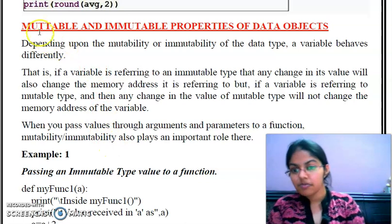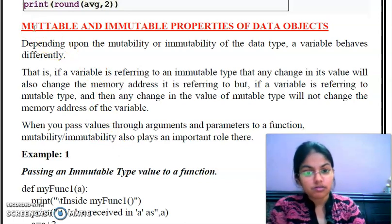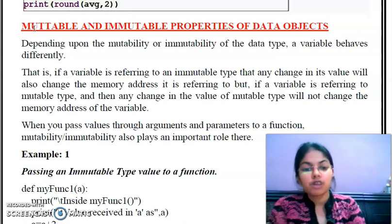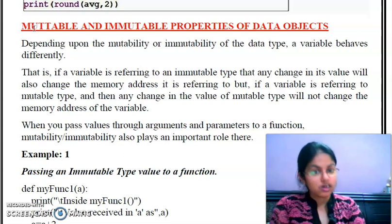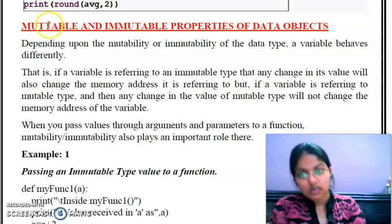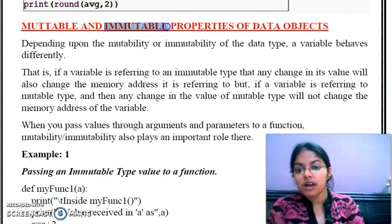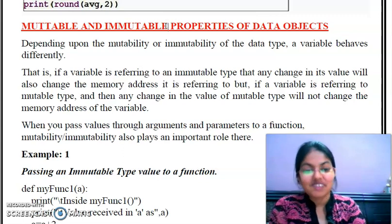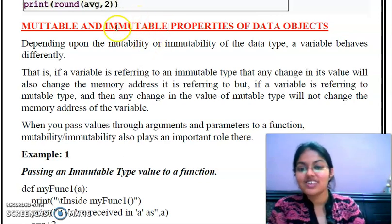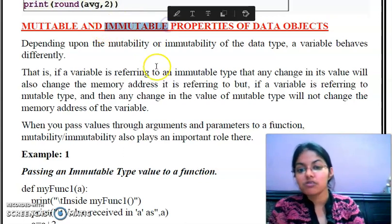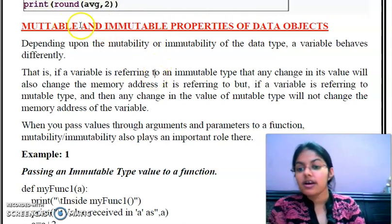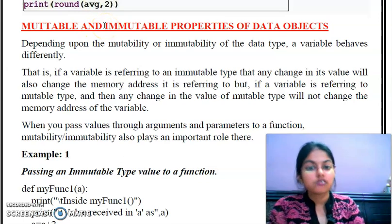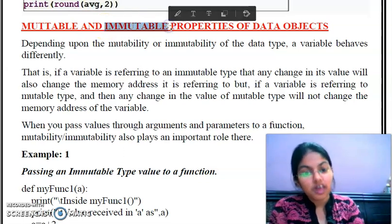Next is mutable and immutable properties of data and objects — again an important topic. Mutable means a value which can be changed, and immutable means a value which cannot be changed. There are many data types in Python. String and tuple are immutable data types. List and dictionary are mutable data types, and integers and floats are also immutable types.